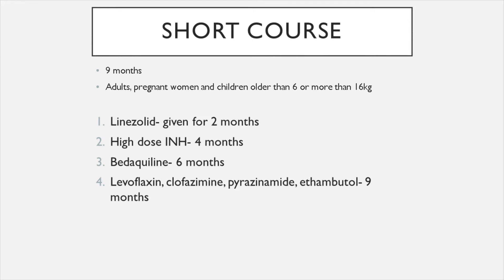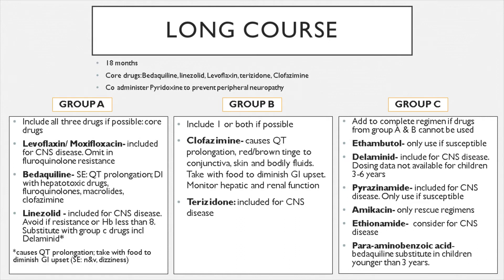Please note that you don't need to know exactly what medications your patient will be on, because the doctors determine the short course or long course based on the patient's conditions — whether they want kids, have liver or renal failure, etc. But know that on the short course these are the medications they will get. For the long course, treatment is 18 months. Core drugs are bedaquiline, linezolid, levofloxacin, terizidone, and clofazimine, administered with pyridoxin to prevent peripheral neuropathy.